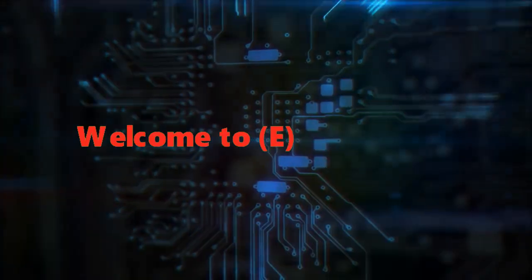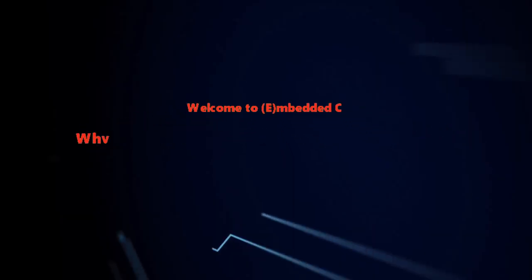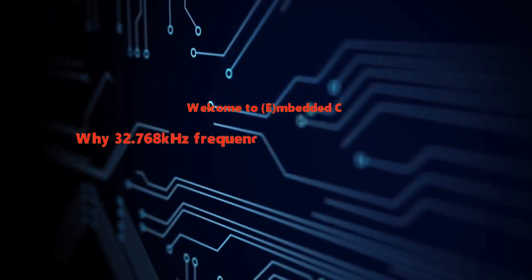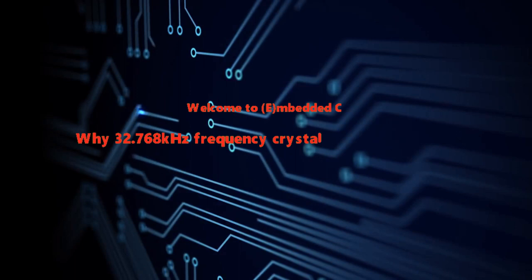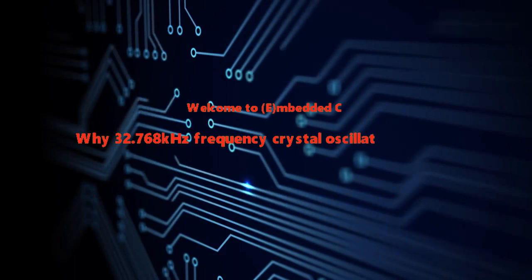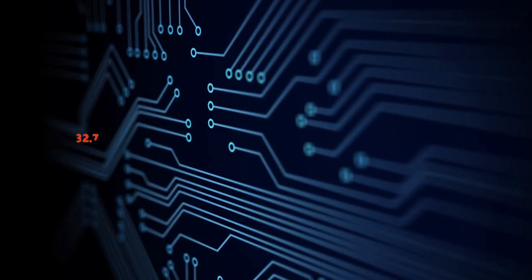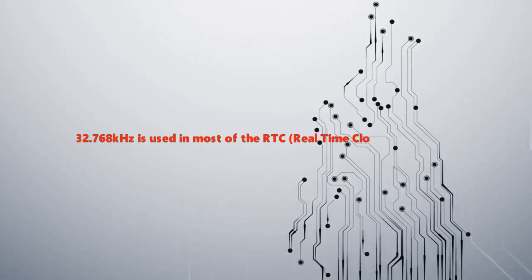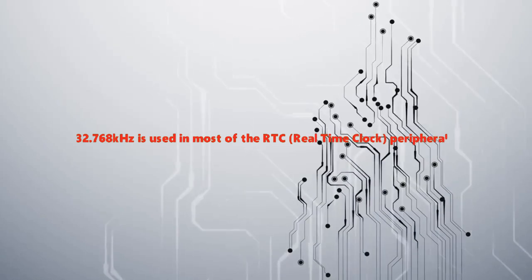Welcome to Embedded Z. In this video we will see why 32.768 kHz frequency crystal oscillator is used in many of the timer and RTC peripherals. 32.768 kHz is used in most of the RTC peripherals and timers.